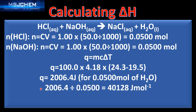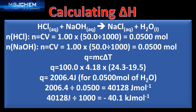When we do the calculation, Q equals 2006.4 joules for 0.0500 moles of water produced. The enthalpy of neutralization is the enthalpy change when one mole of water is formed, so we divide our answer by the number of moles of water produced to give an enthalpy change of 40,128 joules per mole.